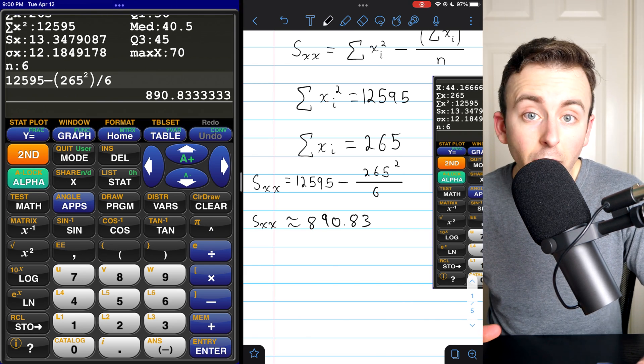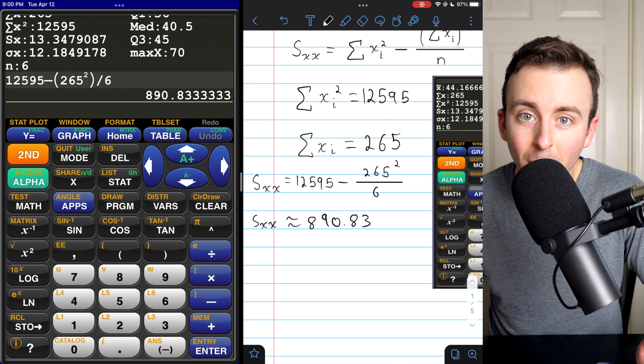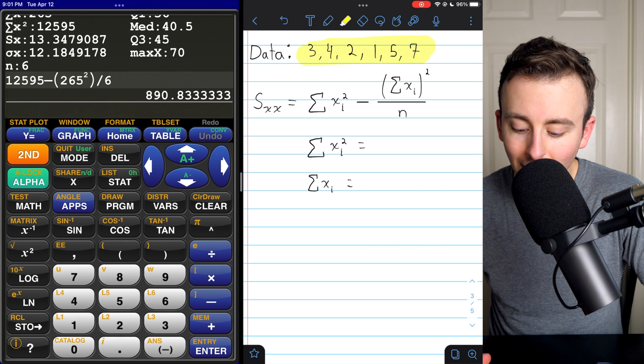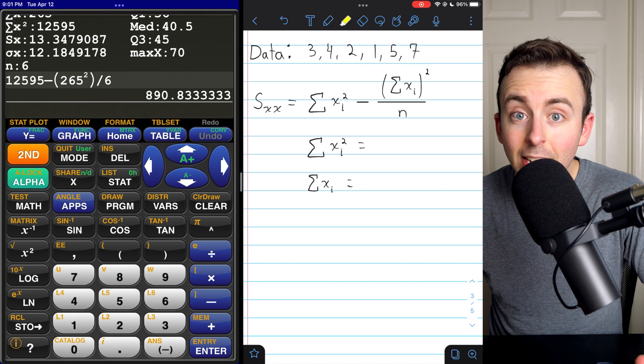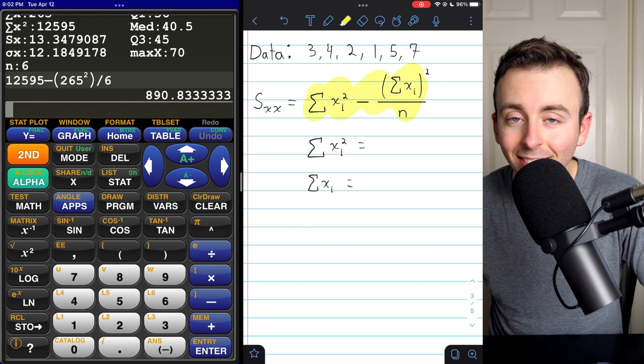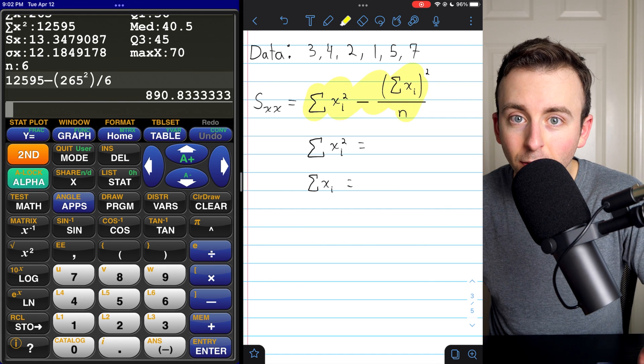That is the sum of the squared deviations from the mean. That's how you calculate it. Lastly, here's an example to try on your own. Another little data set. Plug the data into your calculator and then use this formula to calculate SXX. I'll put what I get on screen now.